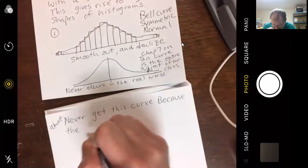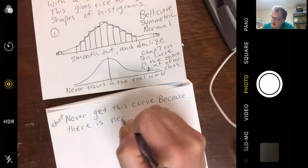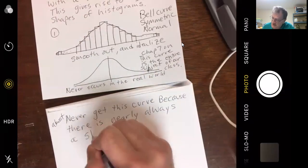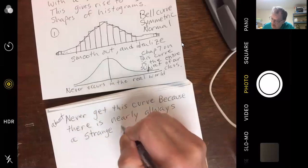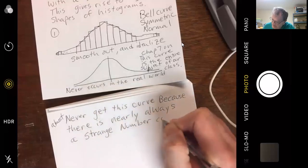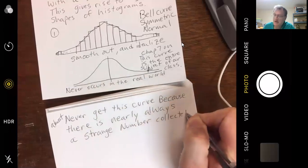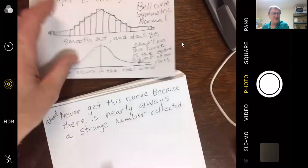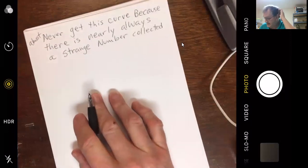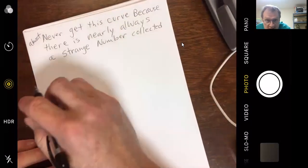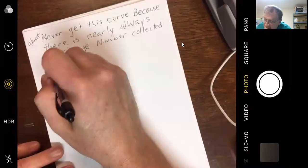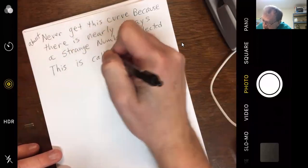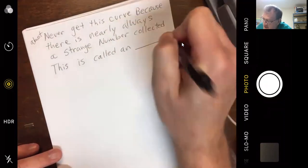Why do you never get that curve? Because you never get this curve. Maybe never is too harsh. Almost never get this curve because there is nearly always a strange number collected. They call it a strange number. Anybody know the formal name for a strange number. Starts with O. Maybe somebody can tell me by the time I get to write it. This is called and blank. Starts with O.